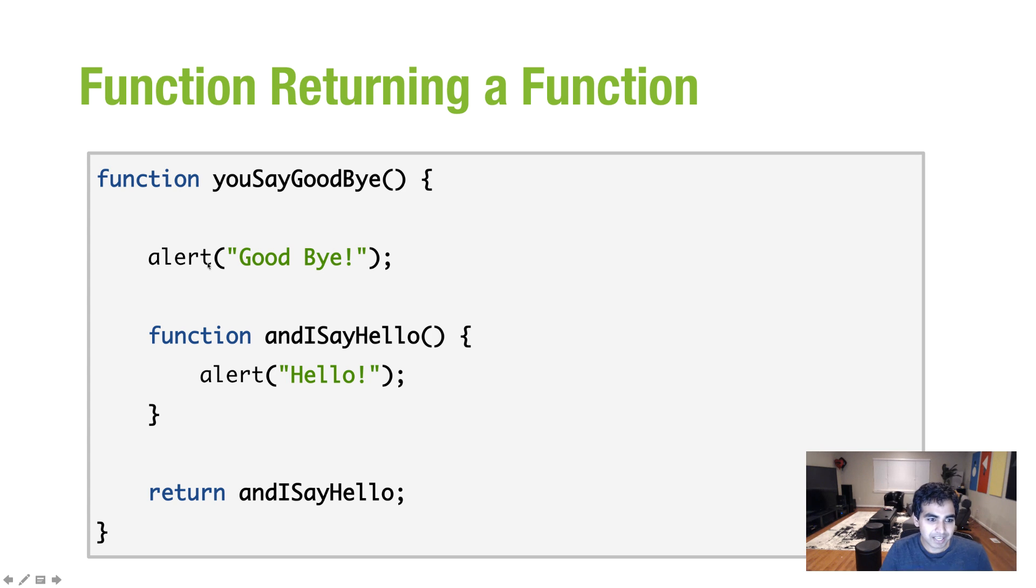So as you know, you can return all sorts of things from a function. You can return simple values. You can return objects. You can return functions, as you see in this example. So I have a function called youSayGoodbye. It has a simple statement inside it called alert, which is goodbye first. And within it, I have a function called andISayHello.